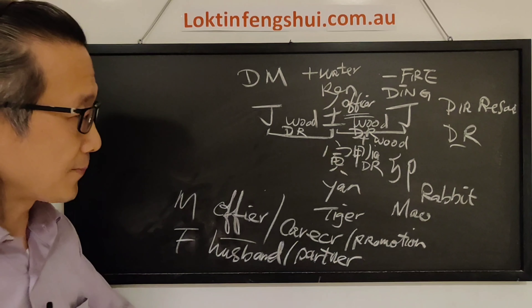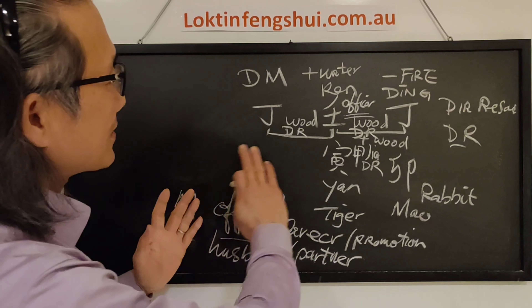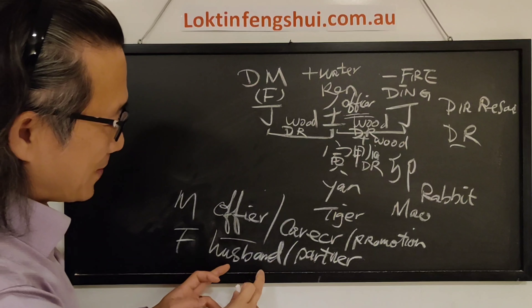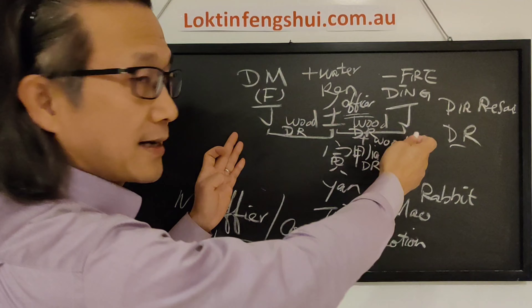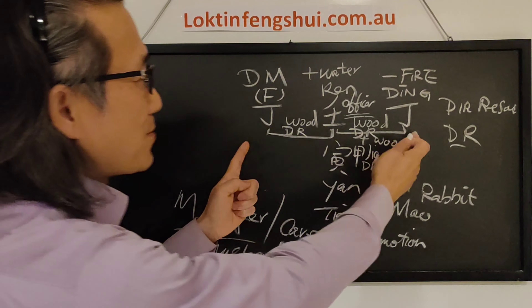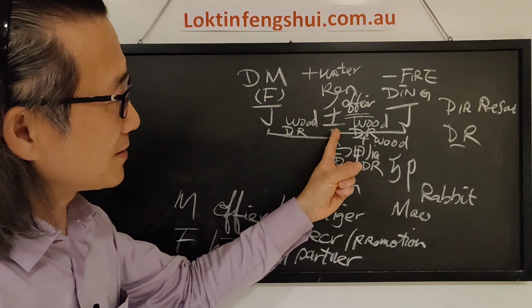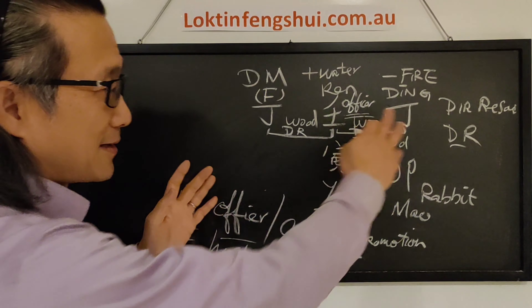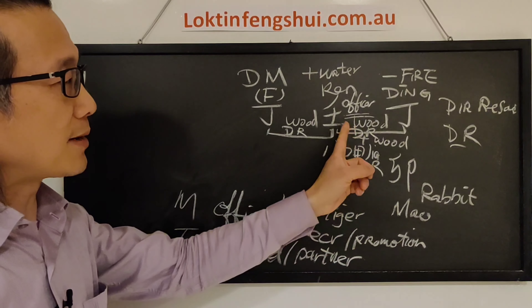So what this means is, when you see this combination on a chart — let's say this is a female chart. So for the female, this is the officer, which represents the husband or partner. Remember, this Ding here is the self element. Of course, this other Ding is not yourself — it is another female, like yourself. So this other female also comes to combine with your partner or your husband. That means your husband has two — you, and another Yin fire, which is the self element. That means someone the same as you comes to combine with your husband.